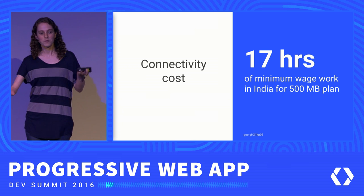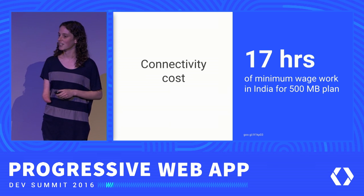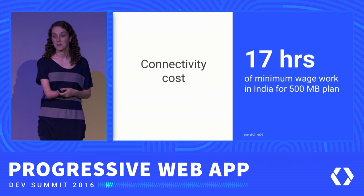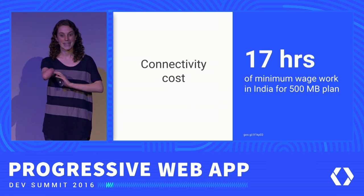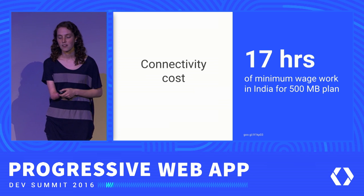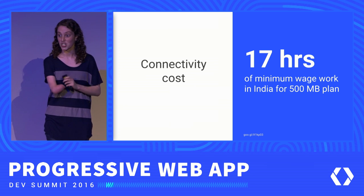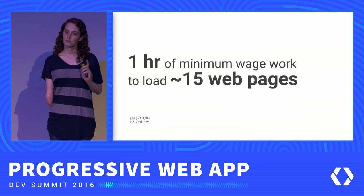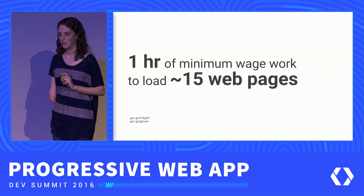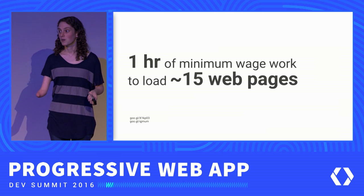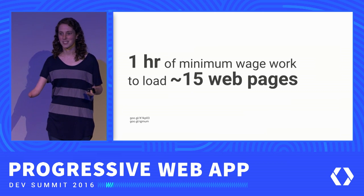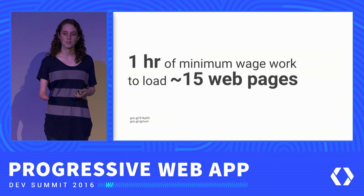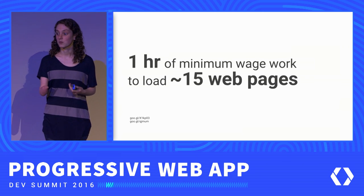We've been thinking about the mobile web, so just to put this in context, looking at the average size of a web page today — if a user in India receiving minimum wage were to spend that entire paycheck on just data to access the mobile web, one hour of minimum wage work would load about 15 web pages. Just take a moment to think about how many web pages you've visited today, or even during the last talk or during this talk, and think about how many hours you would have had to spend to afford that.